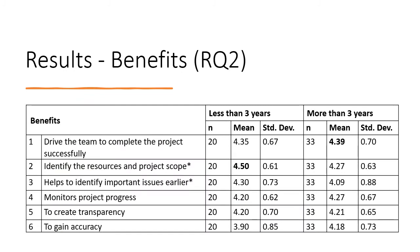For Research Question 2 — what are the benefits of estimation techniques in agile software development? — six categories of perceived benefits are shown in the table. Based on the highest mean value, the most perceived benefits are to drive the team to complete the project successfully, and to identify the resource and project scope. Less experienced respondents reached higher agreement than more experienced ones. However, results show there are no significant differences in perceived value of benefits based on experience.